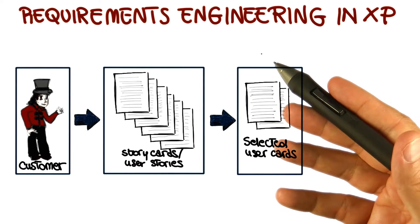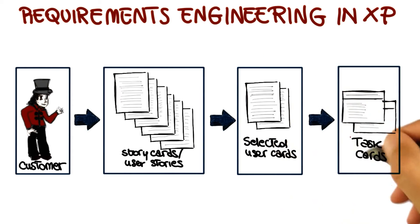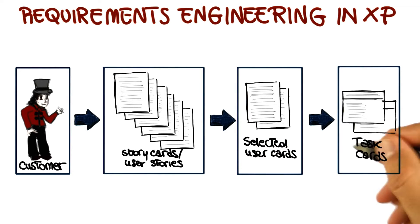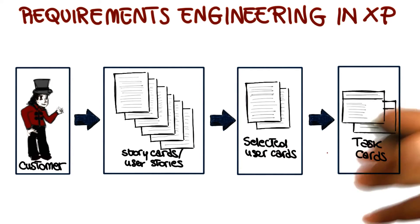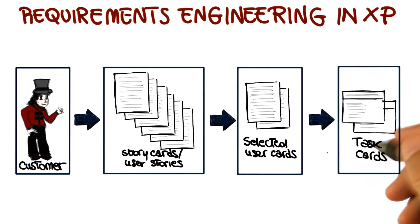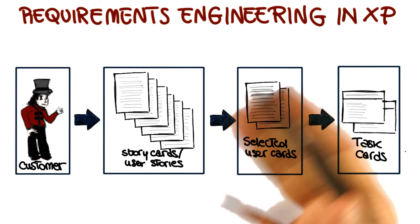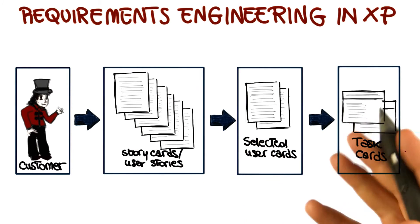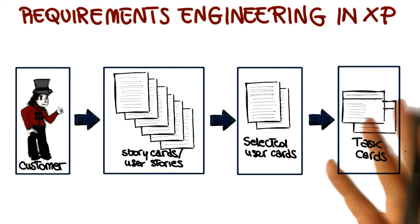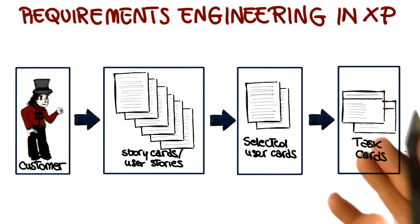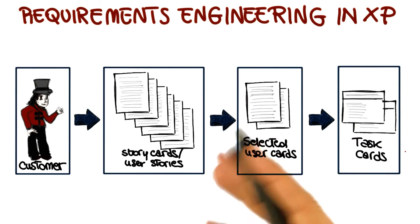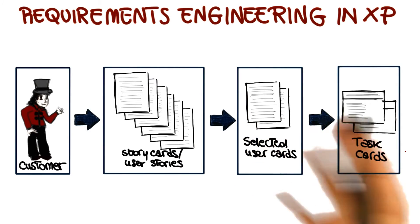At this point, the corresponding cards will be taken by the developers, the tasks will be performed, and the corresponding code will be developed. Just to give you an idea of the order of magnitude, if you consider a few months project, there might be 50 to 100 user stories for a project of that duration.